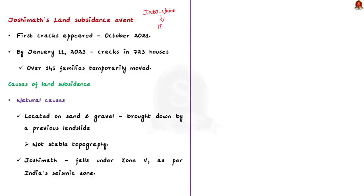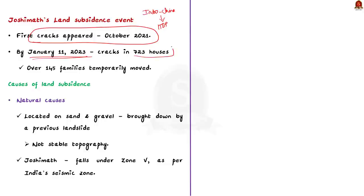Let's move on to see the event of land subsidence which took place in the town. Cracks first appeared in a few houses in Joshimath in October 2021 itself. Over a year later, by January 11, 2023, 723 houses in all nine wards of the town had developed major or minor cracks on the floor, ceilings and walls. In response, around 145 families have been temporarily moved to safer locations. Experts are of the opinion that cracks in the houses occurred due to land subsidence.